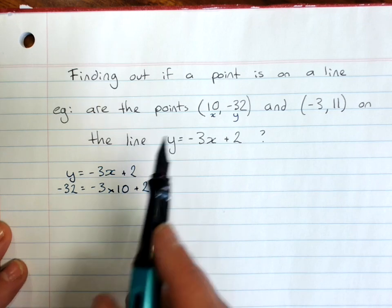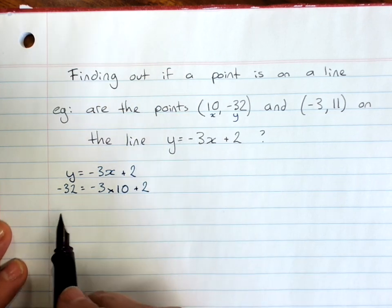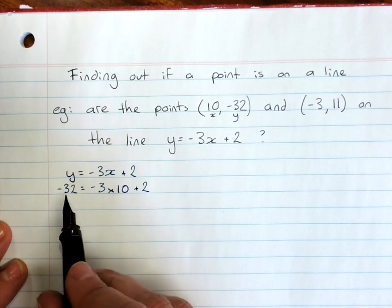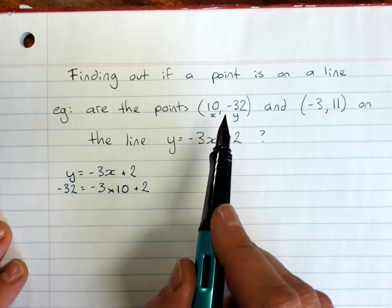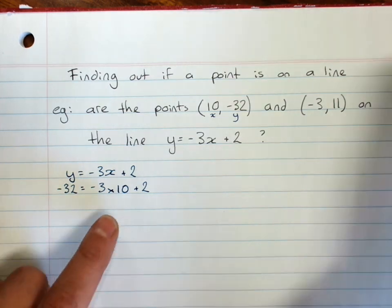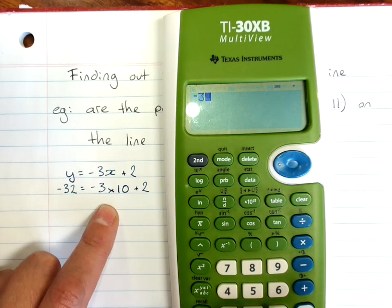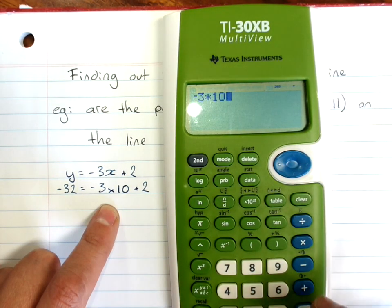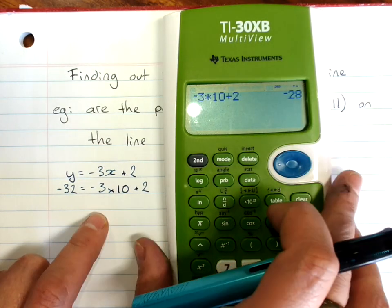Now if the point is on the line, then this will work out to negative 32. If it's not on the line, it won't. So I get my calculator because this is a bit challenging, and I go negative 3 times 10 plus 2... negative 28.